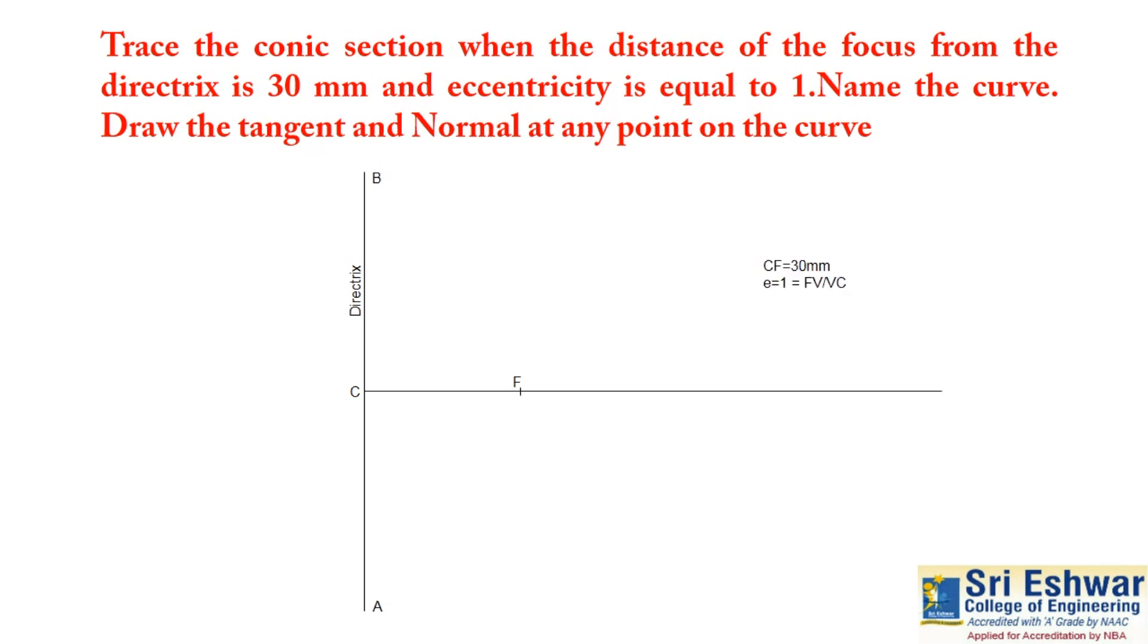FV by VC. Divide by 2. Then draw a perpendicular line. It is equal to VF. Draw this angular line at the bottom and top. Then divide into equal segments like this.